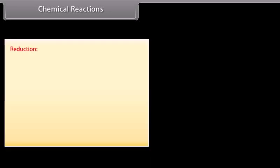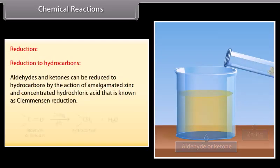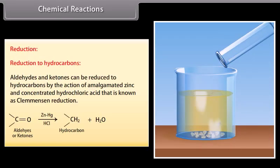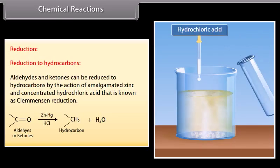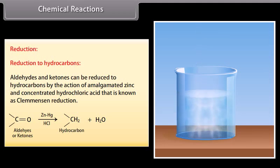Reduction to hydrocarbons: aldehydes and ketones can be reduced to hydrocarbons by the action of amalgamated zinc and concentrated hydrochloric acid. This is known as Clemmensen reduction.